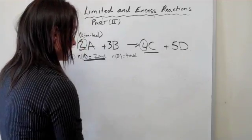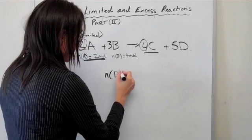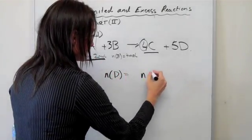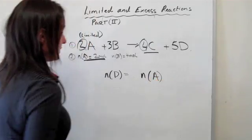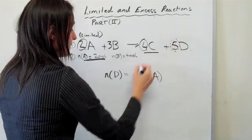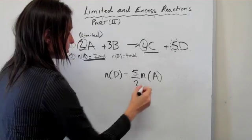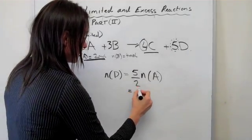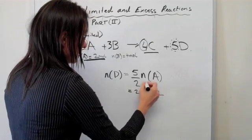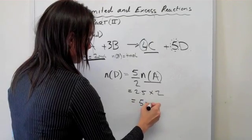And then the second case is finding the mole of D. To find it, you still have to use mole of A because that's our limited one. But now our ratio is a bit different because what we want is 5. What we don't want is 2. So we're just multiplying it by a different factor. So this is going to be 2.5 times by 2. That's a mole of A, and that's 5, 5 mole.